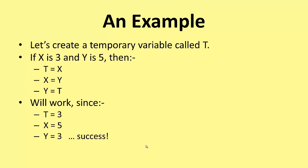So this will work. Let's try it with an example. T is going to be 3, because X was 3. X then becomes 5, because Y was 5. And finally Y becomes 3. We've got a success!